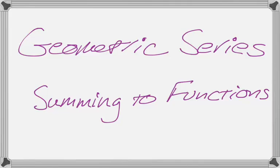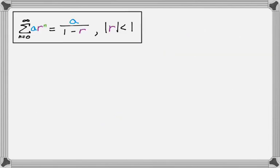In this video we are going to talk about geometric series summing up to functions. There's a couple things that you need to know before we dive in. The first one is that the sum from 0 to infinity of a times r to the n, which is the classic geometric series, can be rewritten or has the sum of a, the first term, over 1 minus r, the ratio, provided that the absolute value of r is less than 1. You have to have that memorized.